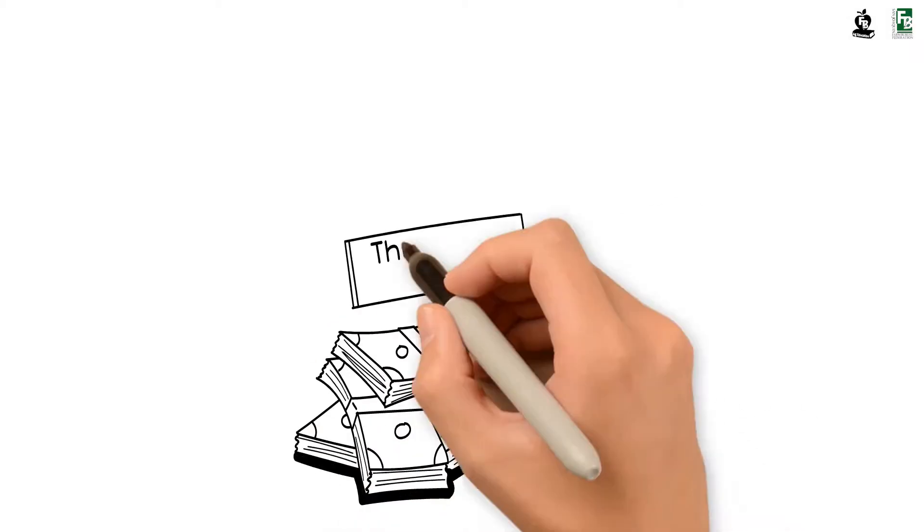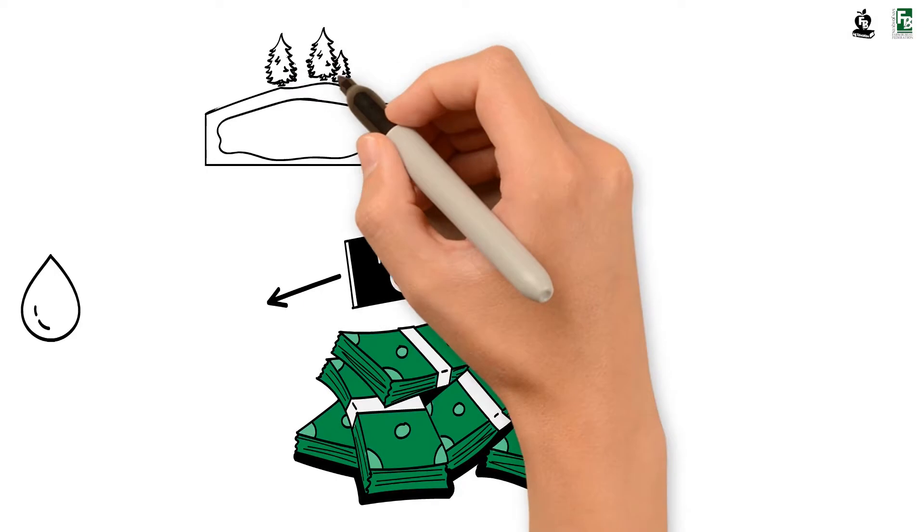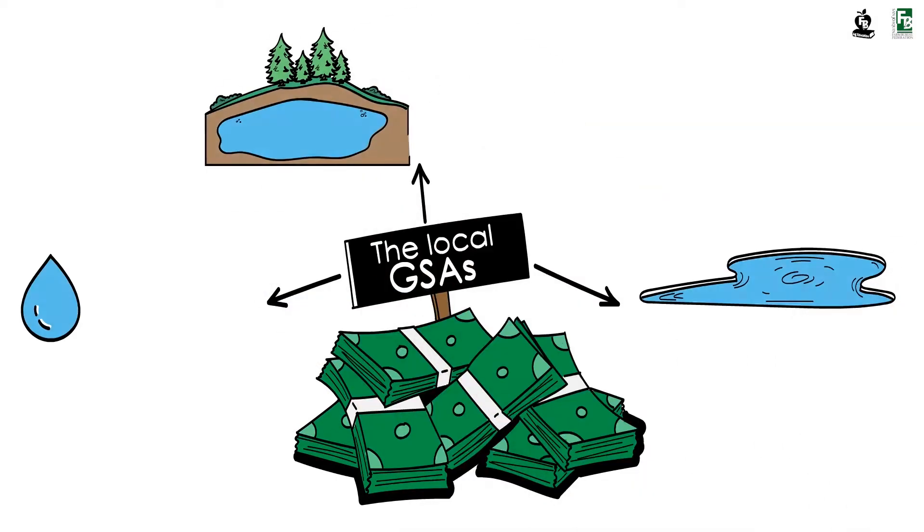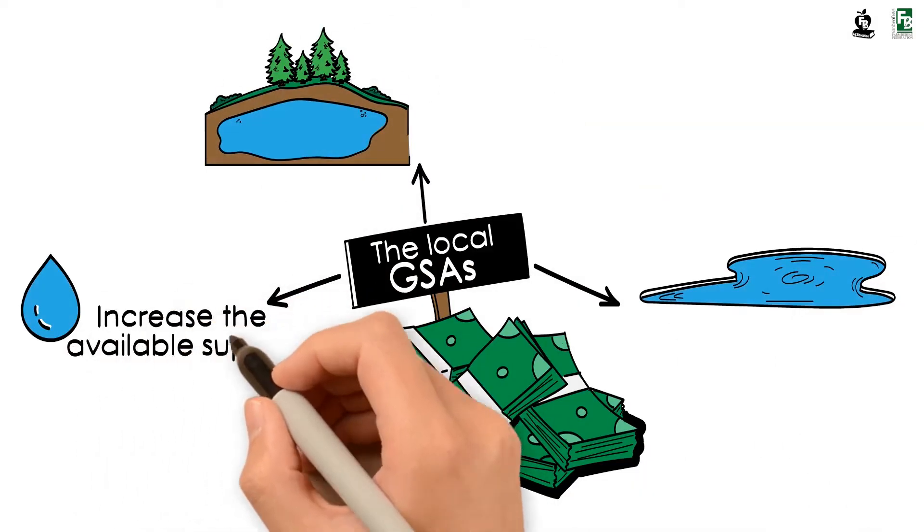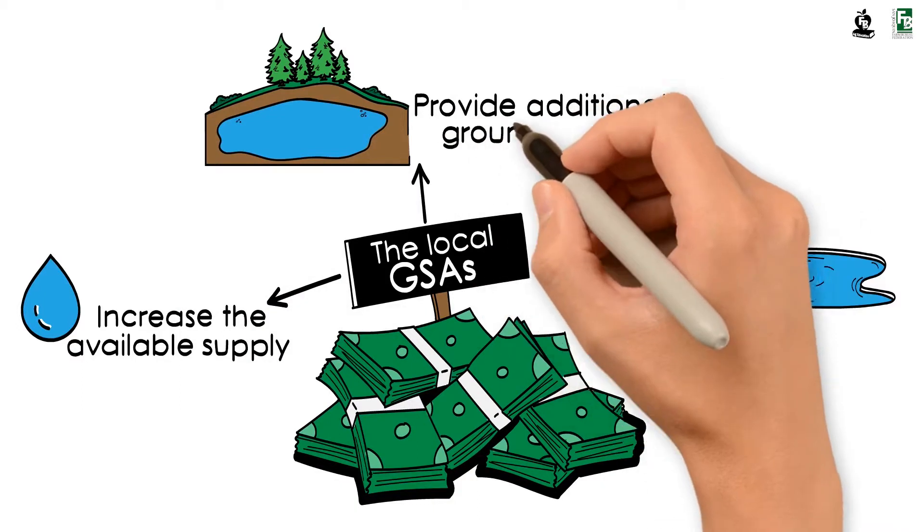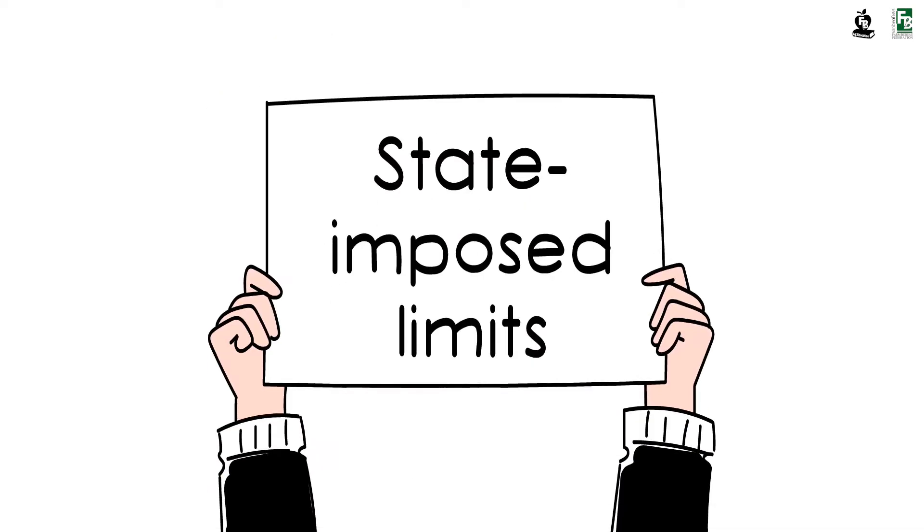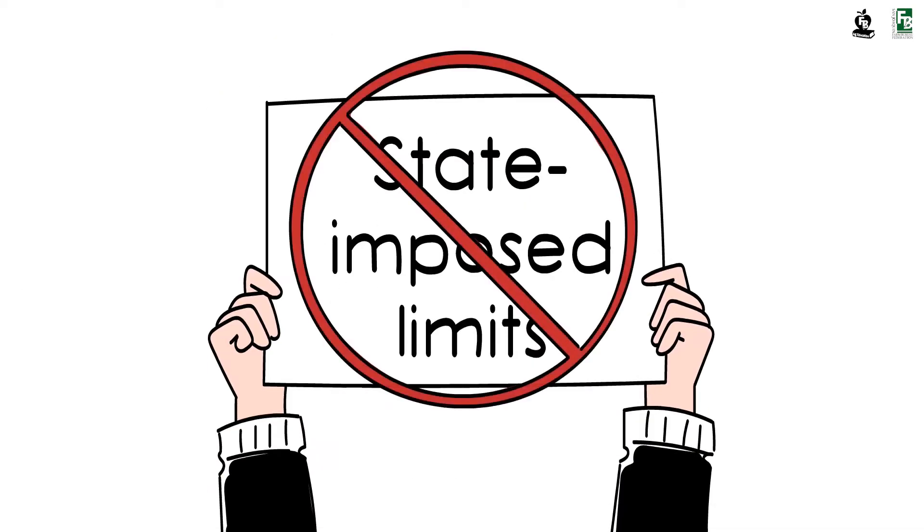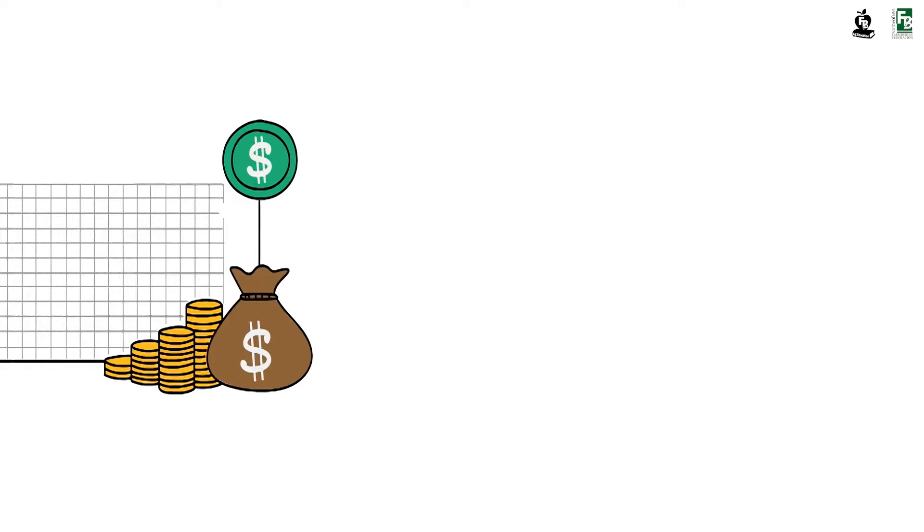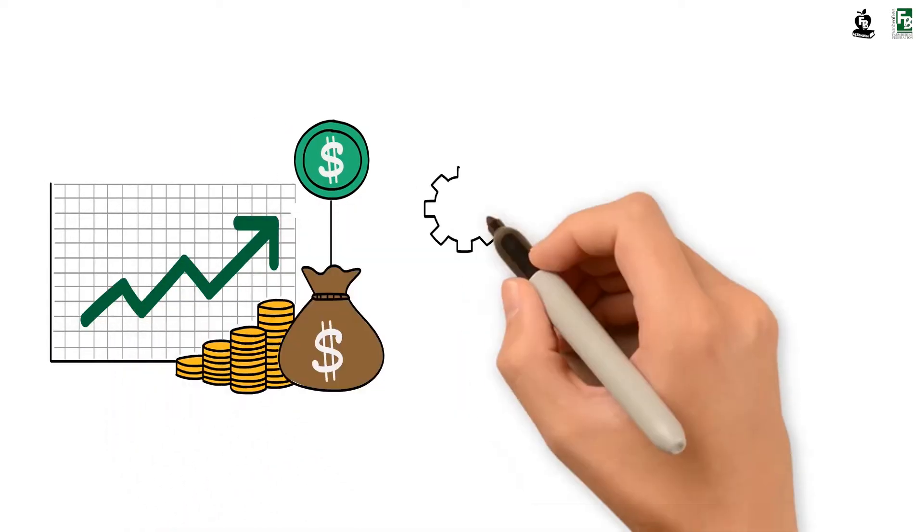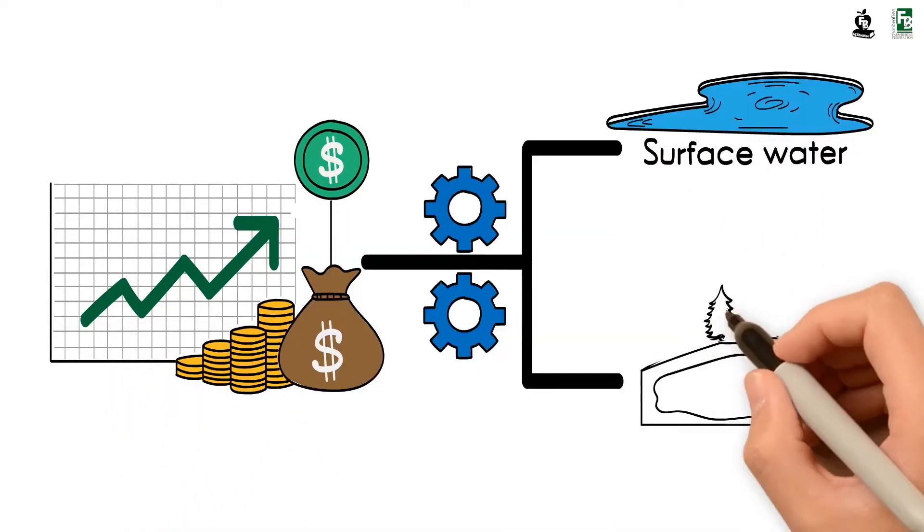These state costs are much higher than what the local GSAs are anticipated to be. The local GSAs anticipate needing to increase fees, but the purpose of these fees would be to build projects that would increase the available supply and provide additional groundwater recharge and make more surface water available to balance the basin. No one wants state-imposed limits, but they are on the table if we do not act.